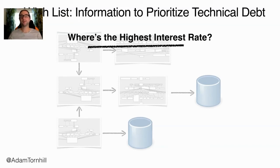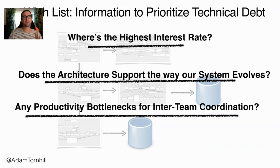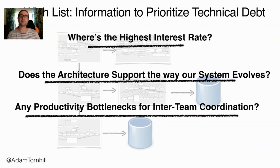The second thing I'd like to know: what about the software architecture? Does the software architecture support the way our system evolves? Are we working with or against our software architecture, which is actually quite common? Finally, what does technical debt look like from the organizational perspective? Are there any productivity bottlenecks — those parts of the code where five different feature teams constantly have to coordinate their efforts? None of this information is available in the code itself. From code alone, we just cannot answer any of these questions.